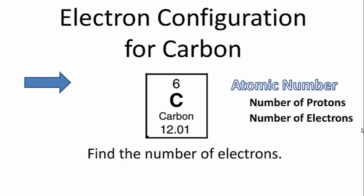To find the electron configuration for carbon, we first need to find the number of electrons for the carbon atom. We'll do that by looking at the periodic table and looking at the atomic number.